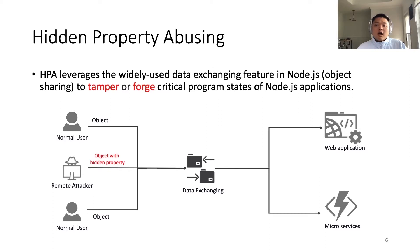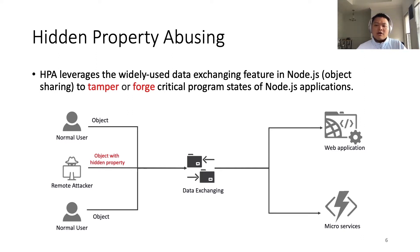However, the convenient object sharing introduced a novel risk, which we call hidden property abusing (HPA). HPA effectively injects additional properties during the object sharing and thus attacks the critical internal program states. We call those additional properties 'hidden properties' because they are like hidden parameters to the endpoint user API. These parameters are associated with certain internal program states, but nobody knows their existence until an attacker launches HPA to attack them.